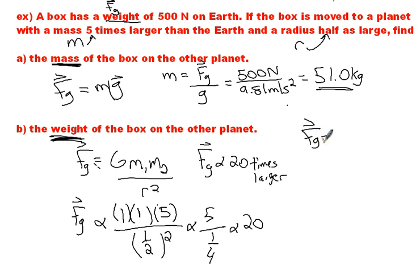So now when I actually go and calculate the force of gravity, I'll take the original one, which is 500 Newtons, and I'm going to multiply it by 20. This has gotten 20 times bigger. So that's going to be 10,000 Newtons, or 1.00 times 10 to the 4 Newtons as our new force of gravity.